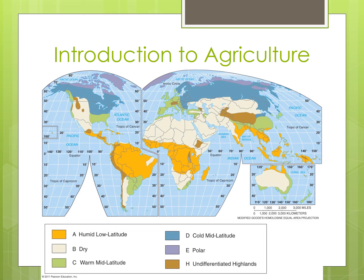Hello Human Geographers, we are back at it again this evening. We begin this evening by looking at the relationship between climate and agriculture. Let's begin by talking about climate and then we'll examine the differences in agricultural systems.